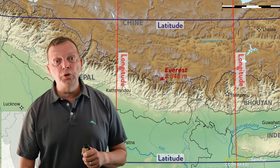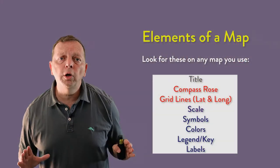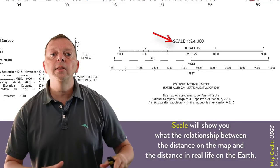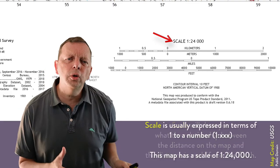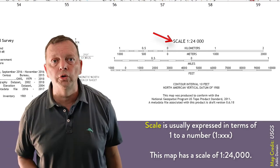Lines of latitude and longitude will also give you that orientation of the map. Remember, lines of longitude always run north and south. But lines of latitude and longitude will also give you an idea of where on the earth the map is supposed to be showing. Then there's something called scale. And the scale of the map tells you the relationship between the distance on a map and the distance on the earth. And it's usually discussed in terms of being a ratio of one to some large number.